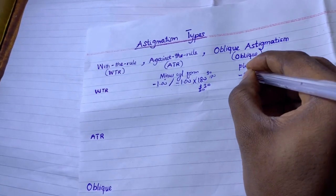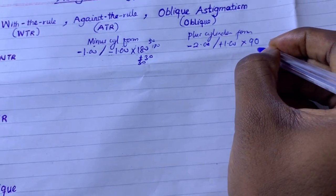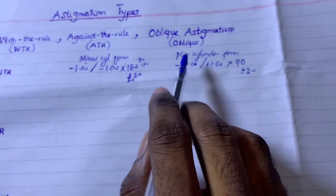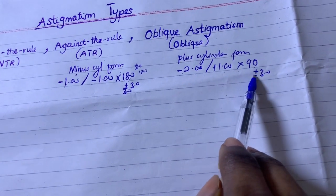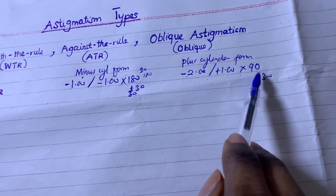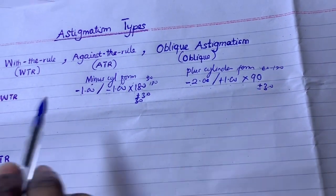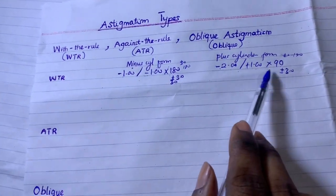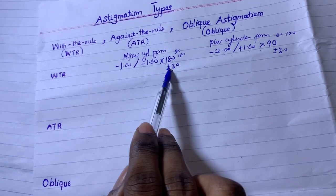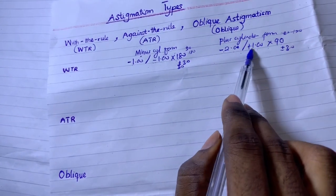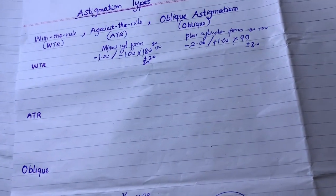For the plus cylinder form: minus two combined with plus one, axis 90 plus or minus 30. Adding 30 gives 120; subtracting 30 gives 60. So if the axis lies between 60 and 120 and the cylinder is plus, it is with-the-rule astigmatism. To summarize: minus cylinder check axis 180 plus or minus 30; plus cylinder check axis 90 plus or minus 30 for with-the-rule.